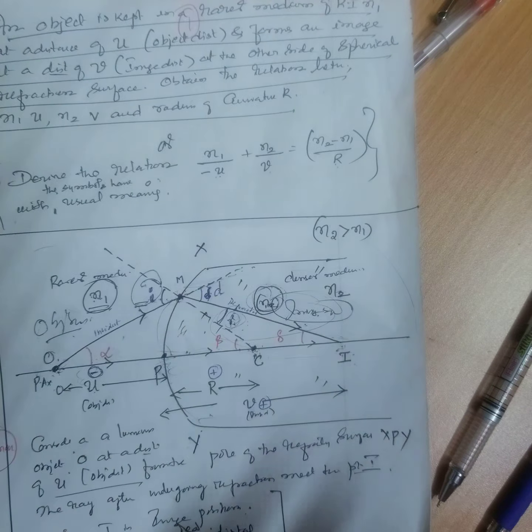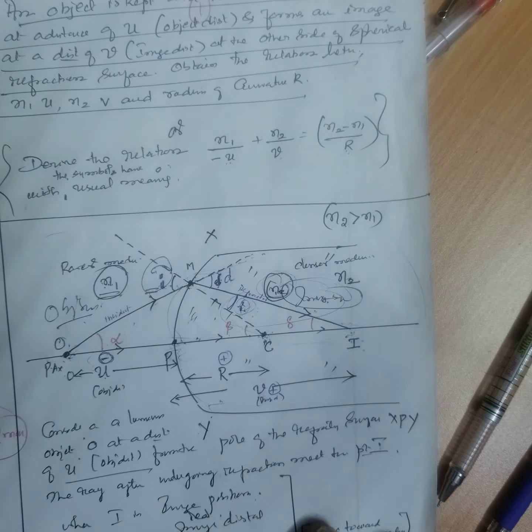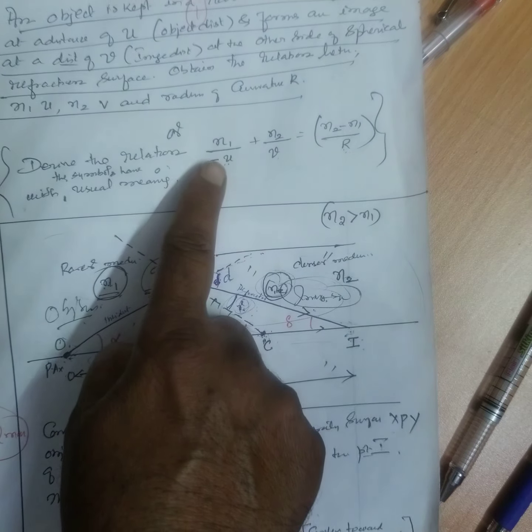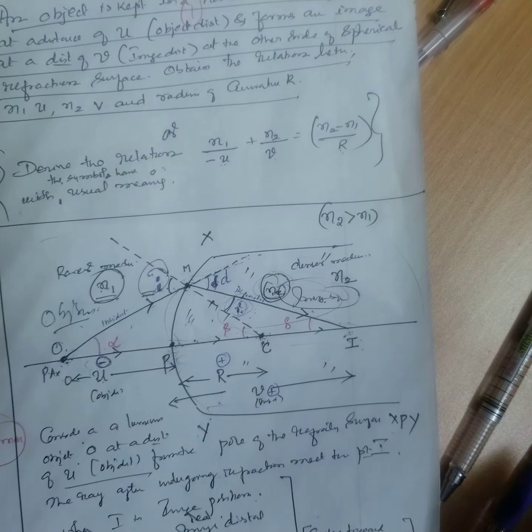What I have done is this diagram. Up to two marks I said that is a relation between what? Refractive index, object distance and radius of curvature for spherical refracting surface.